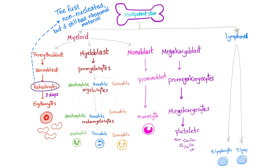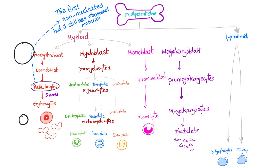So here is our nice slide of hematopoiesis. Here we have the multipotent stem cells in your bone marrow. We have myeloid and lymphoid stem cells. The myeloid stem cells will give rise to a lot of stuff, including the red blood cells. In order to get from here to the mature red blood cells, the cells start bigger and end up being small.